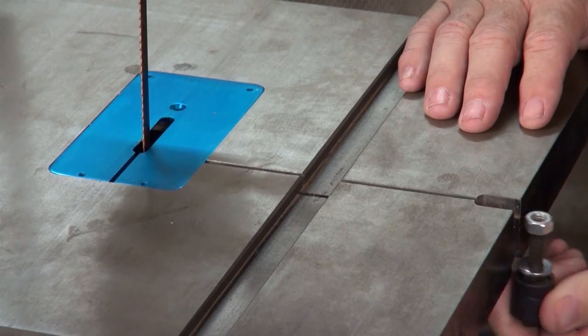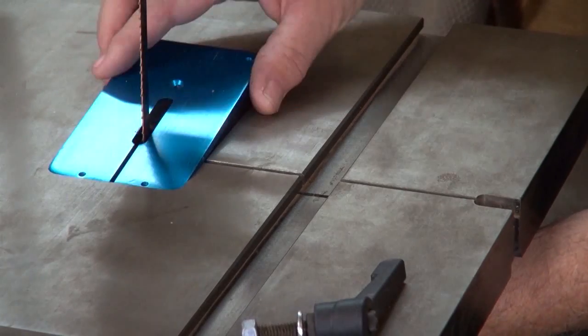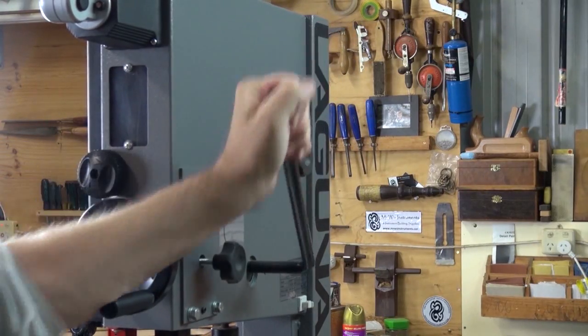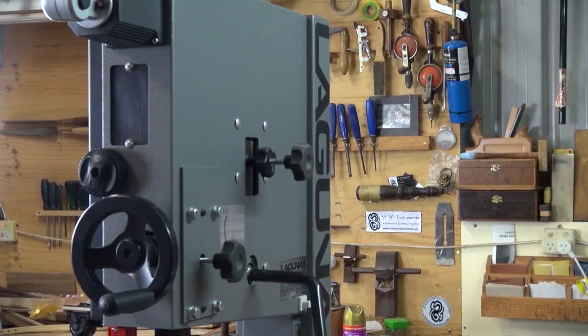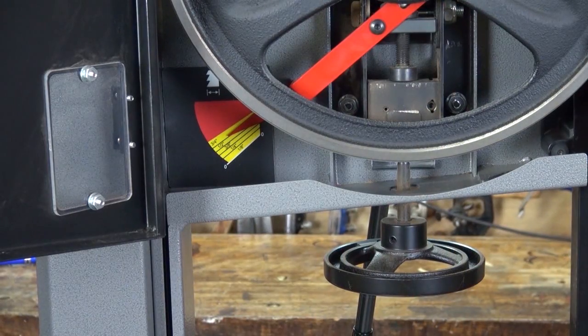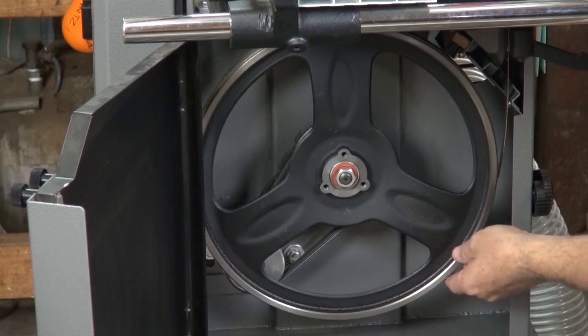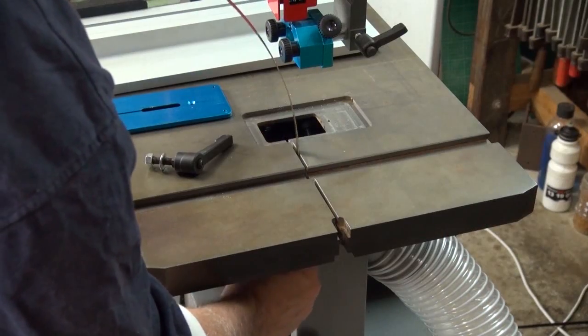First thing I'll do now is remove the blade from the machine. Remove the table leveling device. Ease out the table cover plate. Release the tension on the blade, either by using the lever, if you have one, or if not, back off the tension wheel. Next, remove the blade from the top and bottom wheels and carefully feed it through the slot in the table.